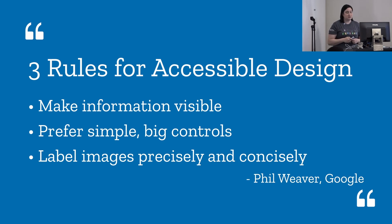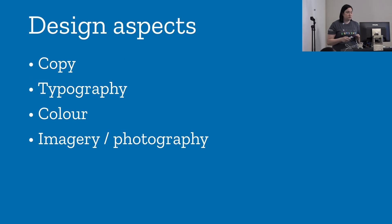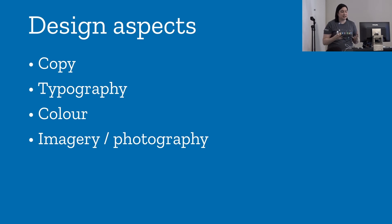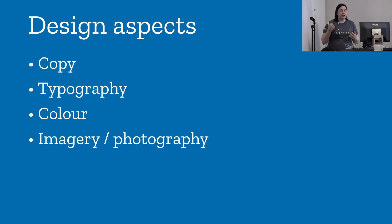The three rules are: make information visible, prefer simple and big controls, and label images precisely and concisely. When designing for accessibility, we need to reconsider design aspects like copy, typography, color, and imagery. Design is a really delicate balance between form and function — between the need to be creative and unique, and the need to be understandable and usable by everyone.